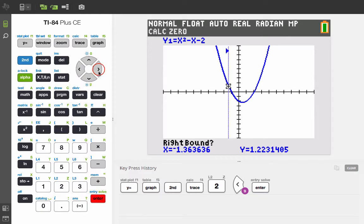And then for the right bound, we're going to move the cursor somewhere to the right of where the zero is and press enter again. And you'll notice that on the color calculators, you'll see these two vertical lines that will tell you that the place where the function crosses the x-axis is somewhere between those two vertical lines. Now, if for some reason it's not, you just need to do this process again.